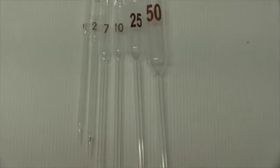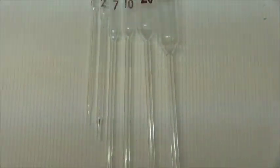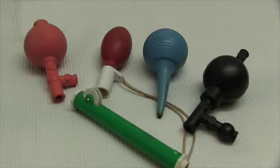Volumetric pipettes are calibrated to deliver a very precise volume of liquid and come in a variety of volumes. Pipette bulbs are used to pull liquid into the pipette. They come in many different forms and are chosen based on personal preference.